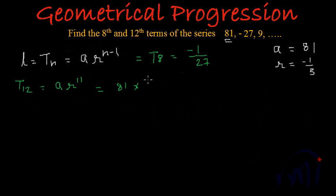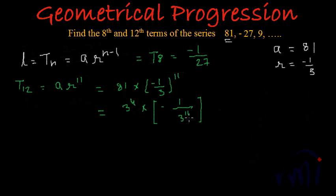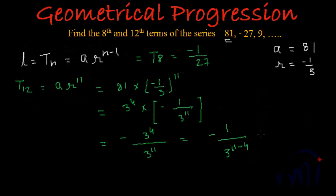So it will become 81 multiplied by minus 1 by 3 to the power 11. 81 can be written as 3 to the power 4. And minus 1 by 3 to the power 11 can be written as minus 1 by 3 to the power 11, because if we have an odd number as the power of a negative number, the result will always be negative. So the total result will be negative, and this further can be written as 3 to the power 4 divided by 3 to the power 11, which gives minus 1 by 3 to the power 7.